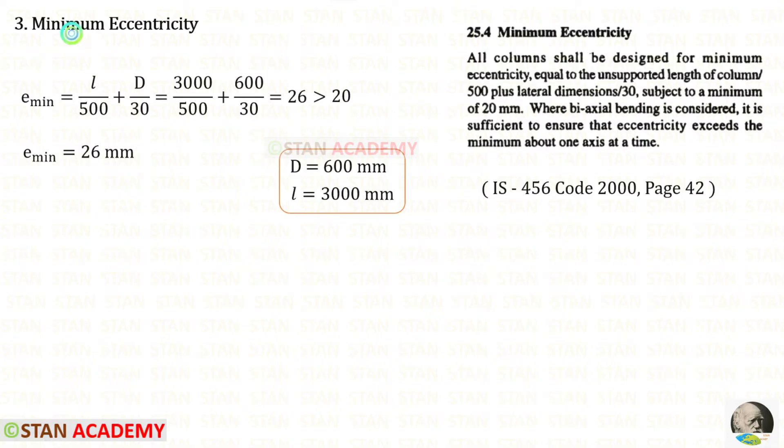Now let us find the minimum eccentricity. Let us open this code book, page number 42. All columns shall be designed for minimum eccentricity equal to the unsupported length of the column upon 500 plus lateral dimension upon 30, subject to a minimum of 20 millimeters. The unsupported length is 3000 and D is 600.